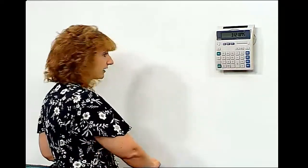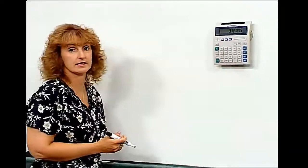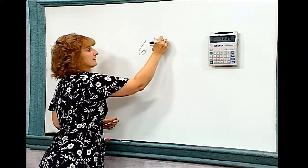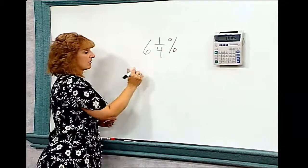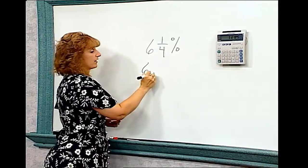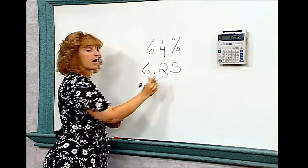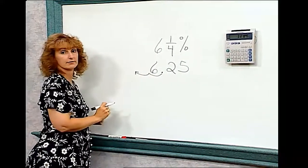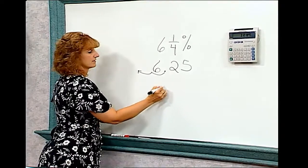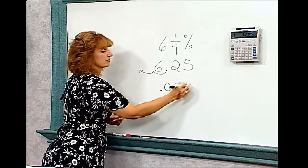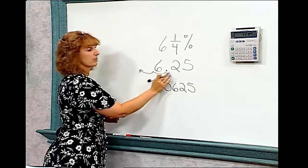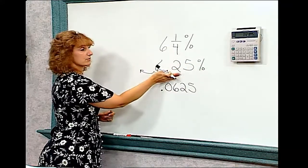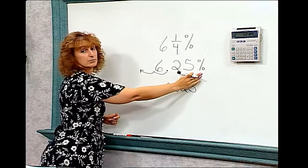If we had a calculator that did not have a percent key, we would first have to take that six and one-quarter percent. We know that it's six point twenty-five. But I would need to move this decimal point two places to the left. So that's point zero six two five. Because six point twenty-five is still a percent. You've changed the fraction to a decimal, but it's still a decimal percent.